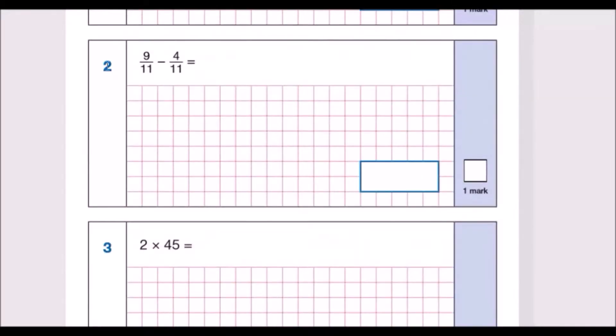Question 2: 9/11 take away 4/11. Well, because the denominators are the same we just subtract the top, 9 take away 4 is 5, so 5/11. Easy question.